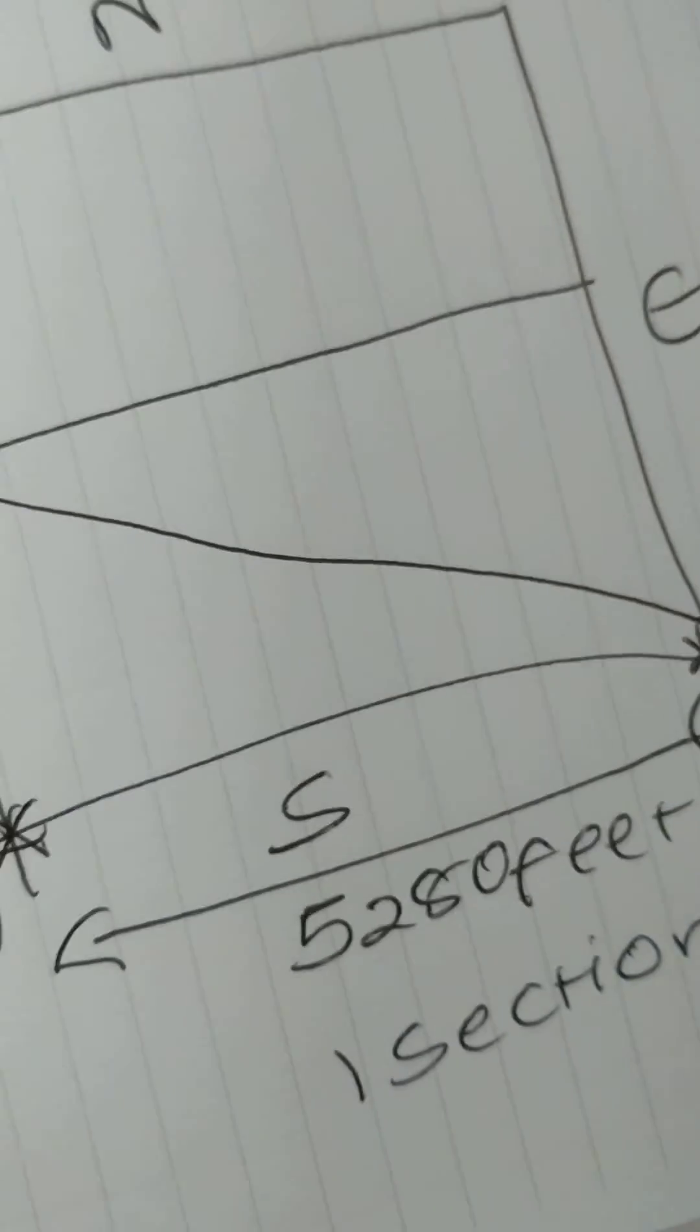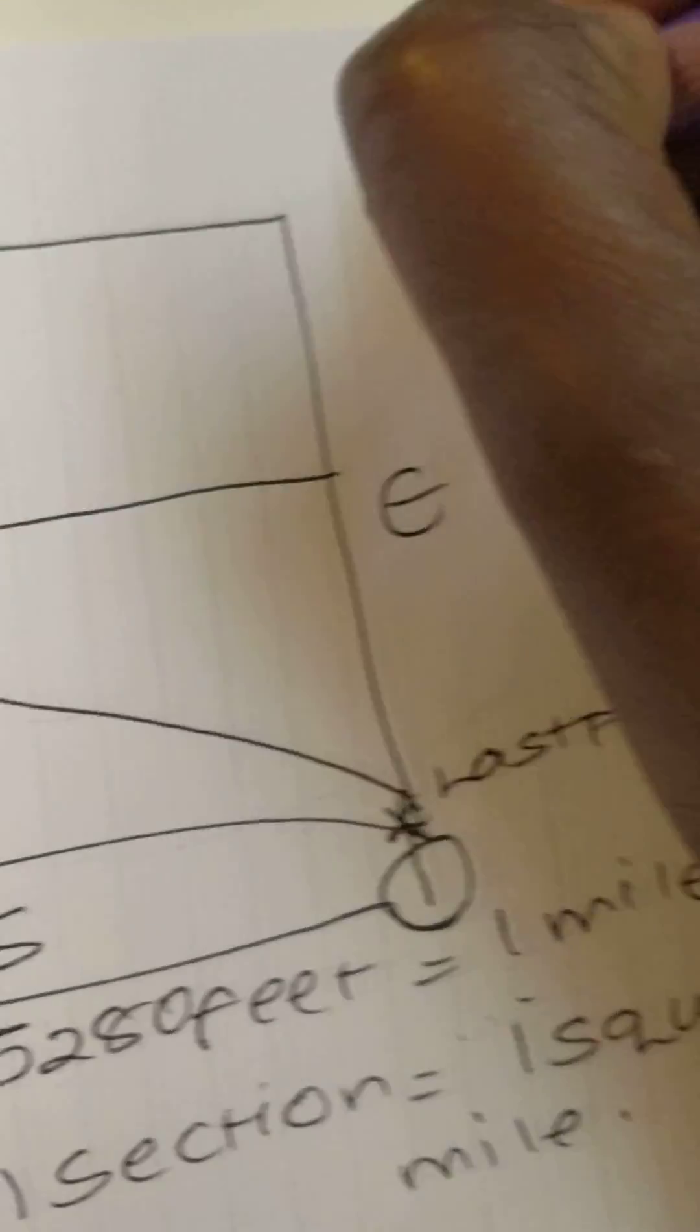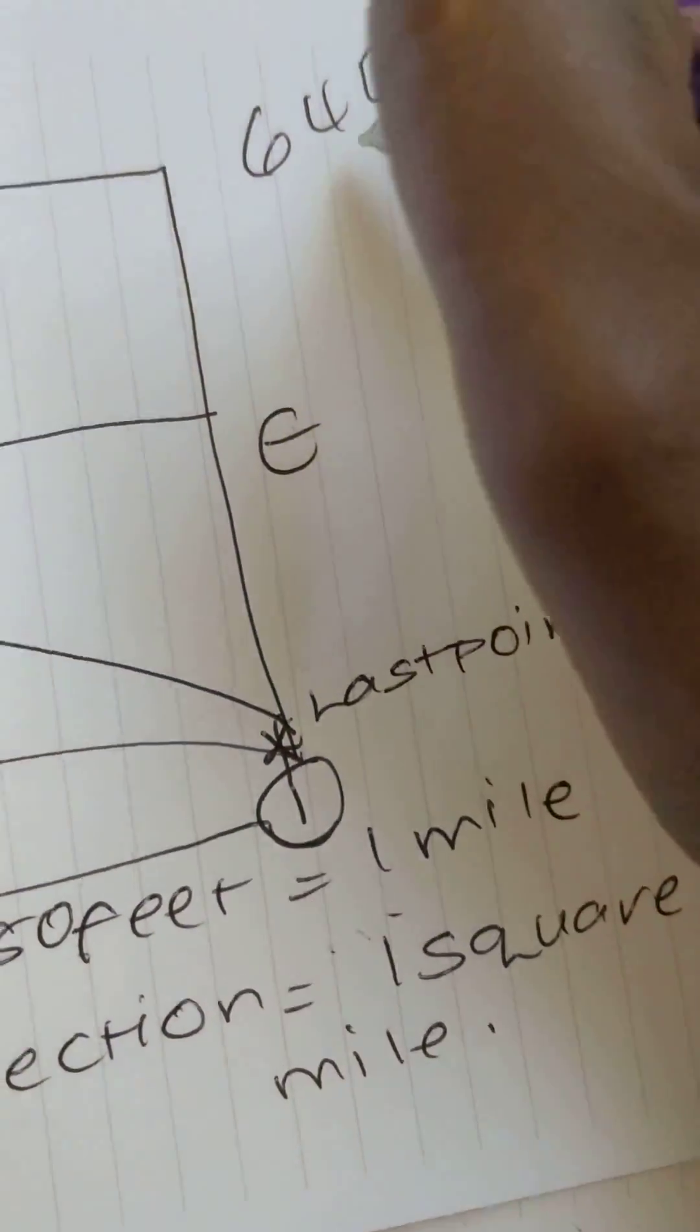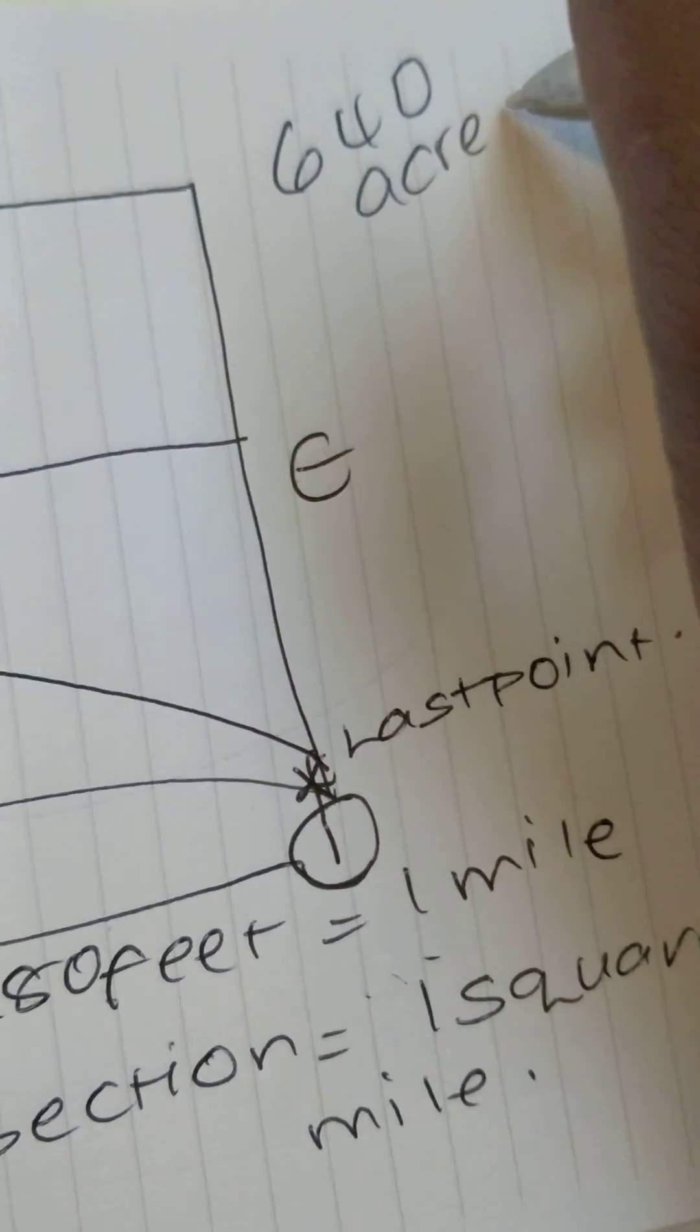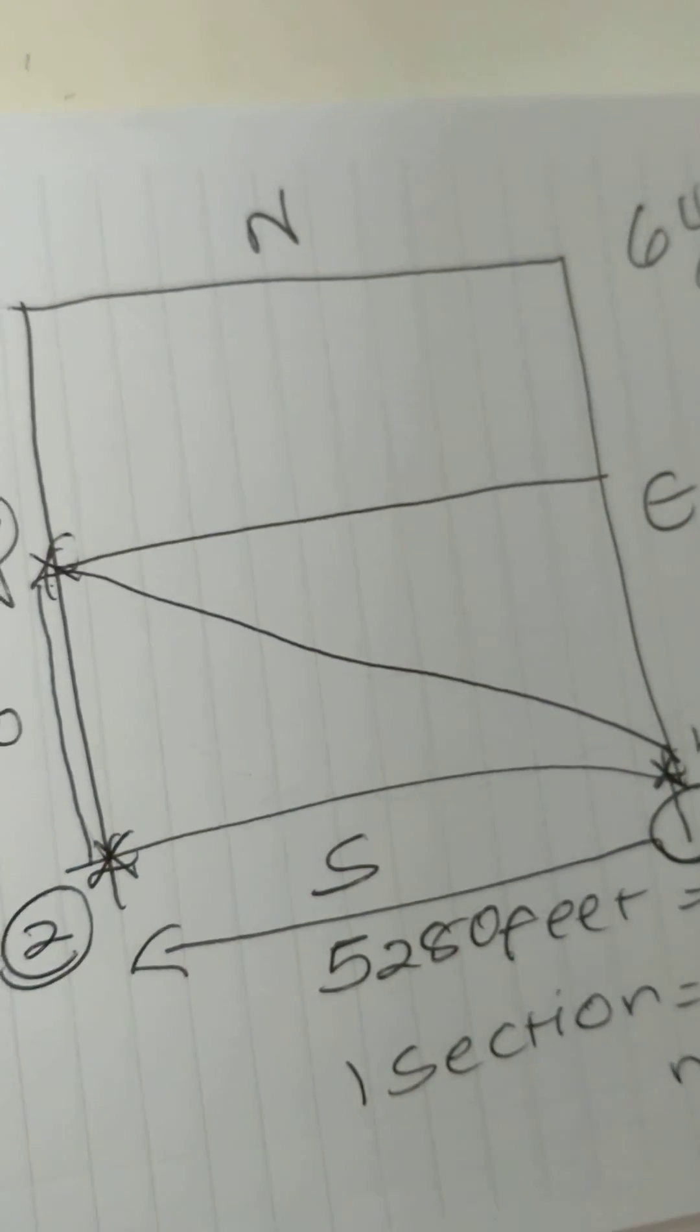How do I get to 160? This whole box is 640 acres. Right? Half of it is going to be 320. Yep. 320. And half here is 320.